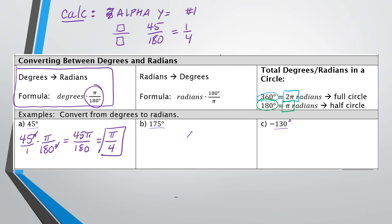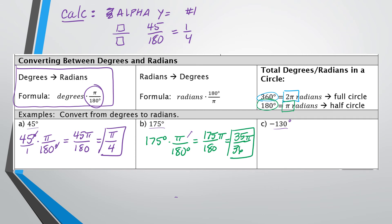Let's move on to question B: 175 degrees. Multiply it by π/180. In the calculator, put in 175 over 180 — remember the pi goes there but don't type it in. The calculator reduces the fraction to 35 over 36, and pi always goes in the numerator. So the final answer is 35π over 36.